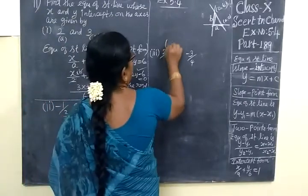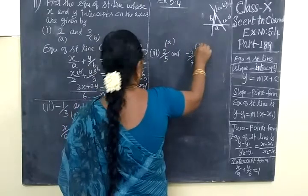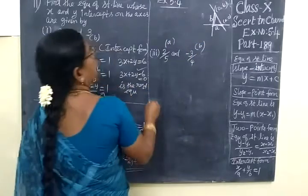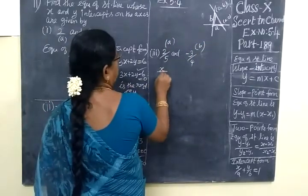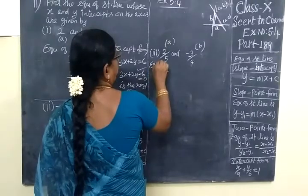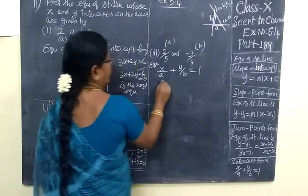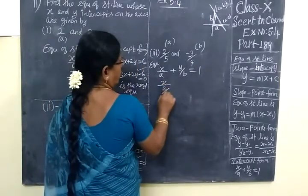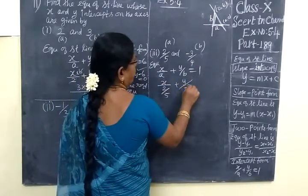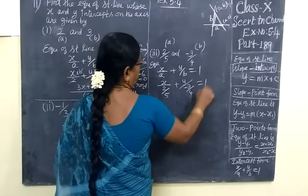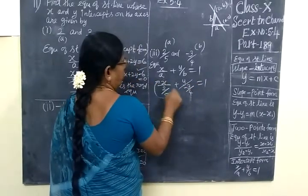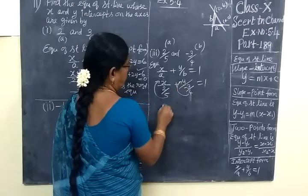This one is A and this one is B. So here also you will write equation of straight line: X by A plus Y by B equal to 1. X by A value 5 plus Y by B value minus 3 by 4 equal to 1. 5 will go here, then 4 also.